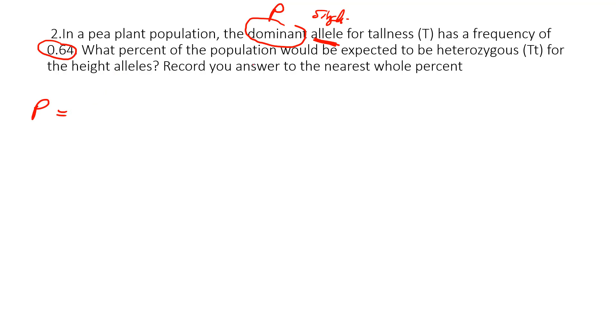P equals, just a single P, not P squared, because they're giving us the allele frequency here. And that's 0.64.